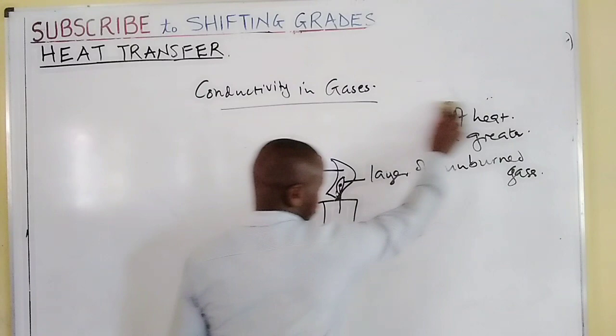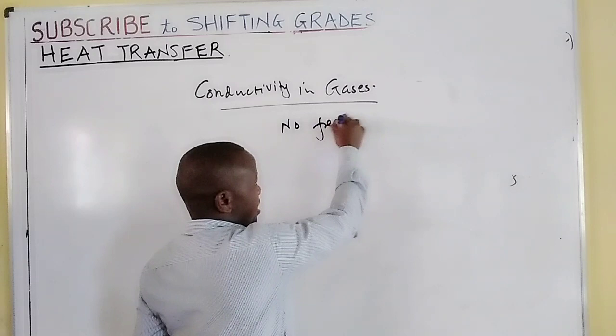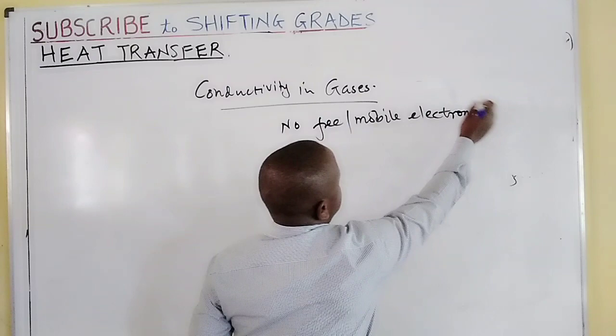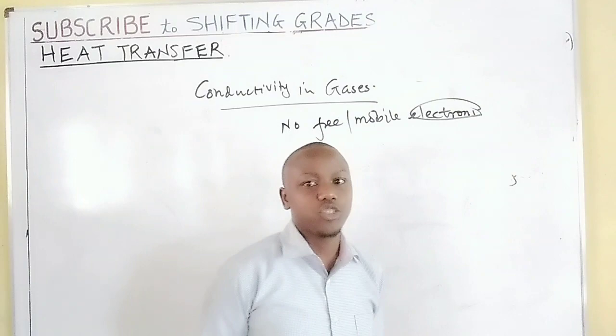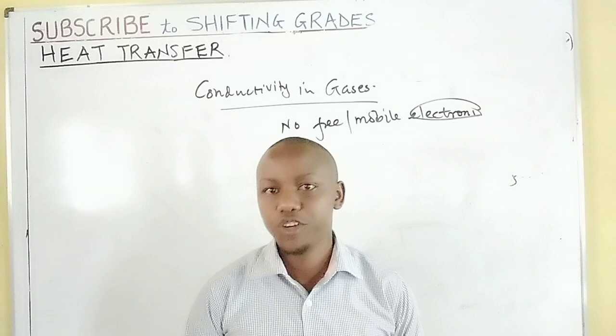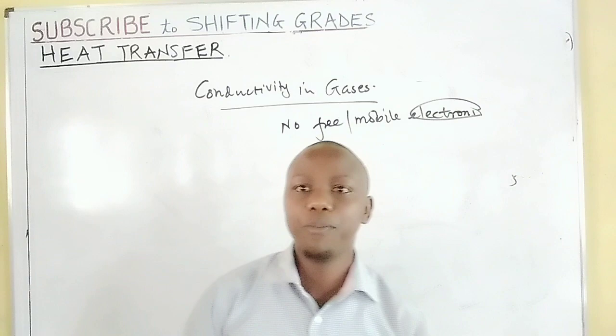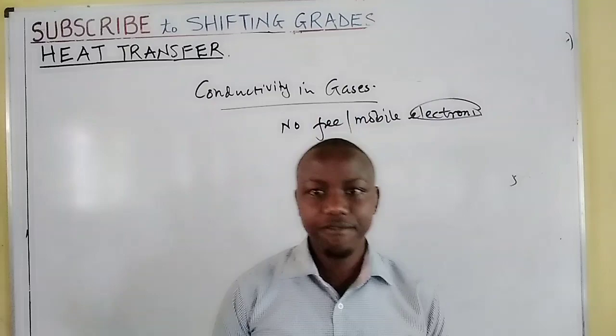Heat from the burning zone cannot be transmitted into the layer with unburned gases, therefore the matchstick remains unburned. So gases are the poorest conductors of heat energy. They also don't have free electrons — also called mobile electrons — and remember, electrons are the particles responsible for transfer or transmission of heat. It is these electrons which, when heated, gain kinetic energy and are able to move within the structure of a material, transmitting the heat along with them. In gases, they are not present, therefore conduction in gases is very minimal and very poor.